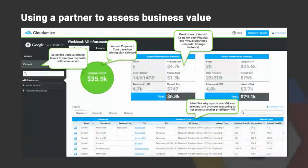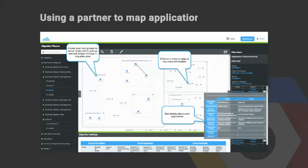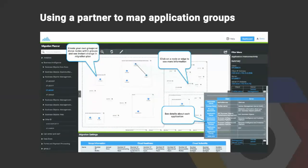Here's an example of using a partner to assess business value. This screenshot from our partner Cloudimize shows an assessment of a workload moving to Google Cloud Platform, identifying the cost and platforms needed, including total annual cost and which resources need to be instantiated. A second screenshot from Cloudimize shows application group mapping — Cloudimize maps communication between different systems within the network, showing what needs to be moved together logically, grouping servers so they can be moved in blocks.